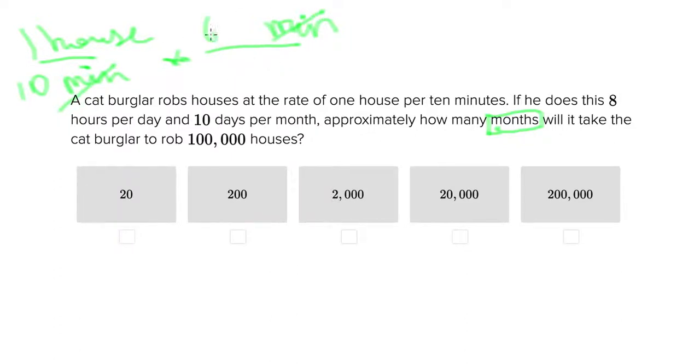We know that there are 60 minutes in one hour and we're going to use hours because we're told that there are only 8 hours per day being used. So we can cancel out the minutes and multiply across. We're going to have 60 houses now being robbed every 10 hours, and this is the same as saying 6 houses being robbed per hour.